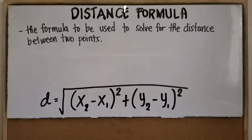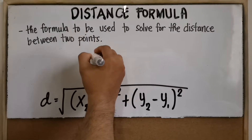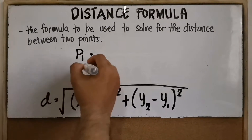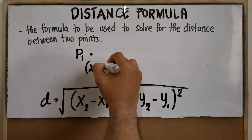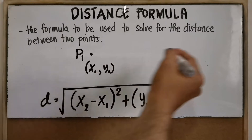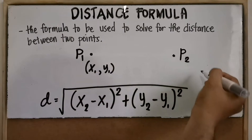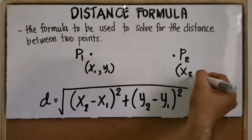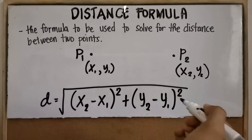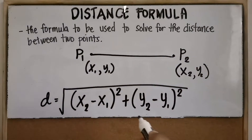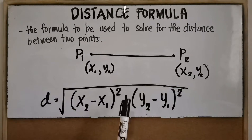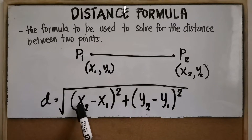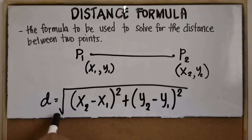First, let's talk about the distance formula. It is the formula used to solve for the distance between two points. For example, we have point one with coordinates x sub one and y sub one, and point two with coordinates x sub two and y sub two. To solve for the distance between these points, we use the distance formula: d is equal to the square root of the sum of the squares of x sub two minus x sub one, and y sub two minus y sub one.